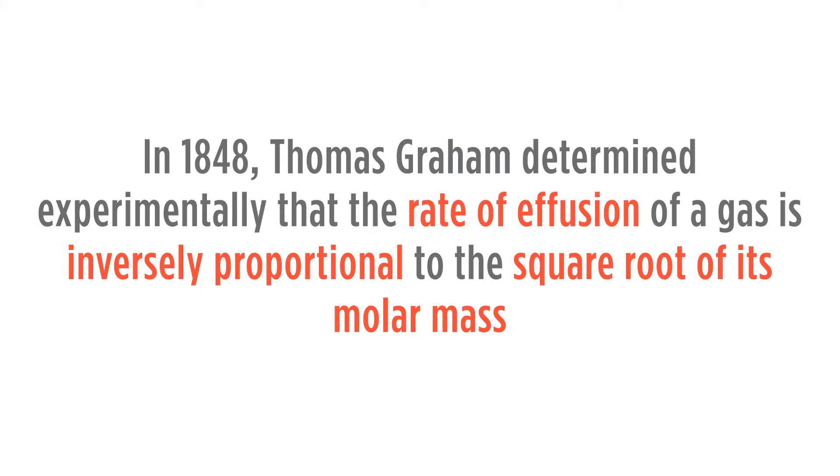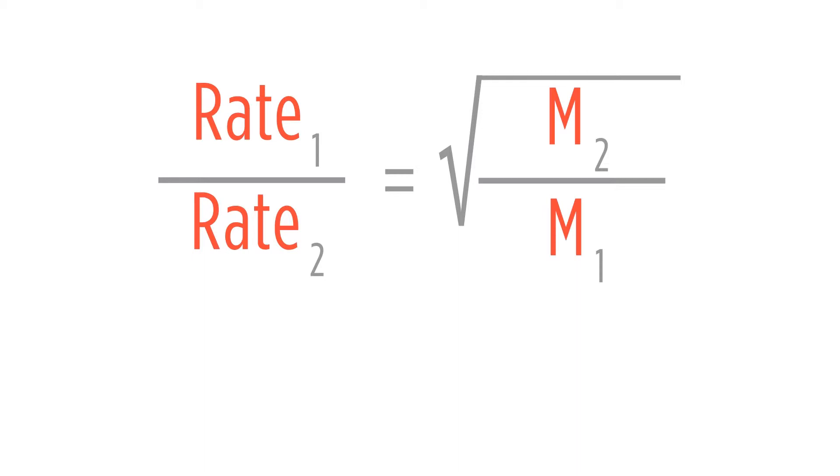This can be shown if we had two gases as the proportion R1 over R2 is equal to the square root of M2 over M1, where R is the rate of effusion and M is the molar mass. We can also use this formula for diffusion.